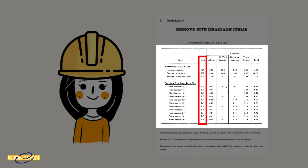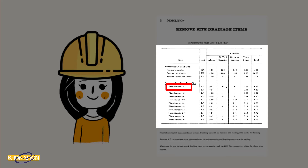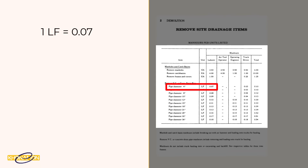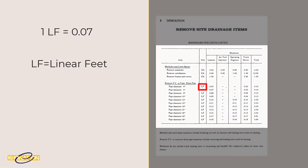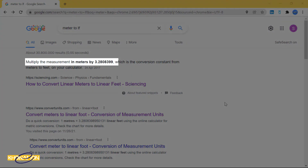Here, each man-hour is calculated according to the pipe diameter. For example, if I want to remove a 4-inch pipe diameter, 0.07 labour man-hours is needed per LF — that is linear feet. In most projects, meters are used for piping, so I need to convert. I google the conversion of meters to LF — one meter is 3.28 LF.